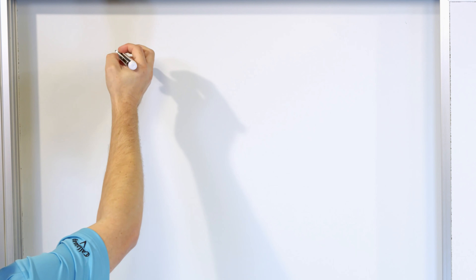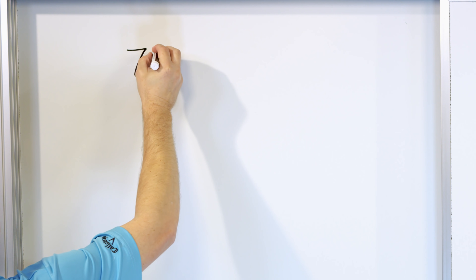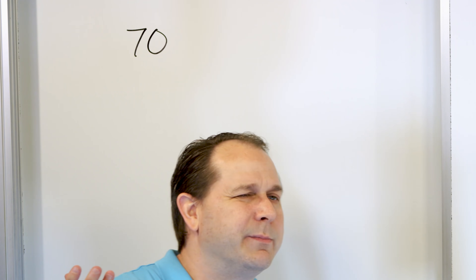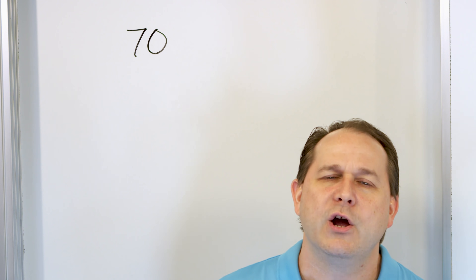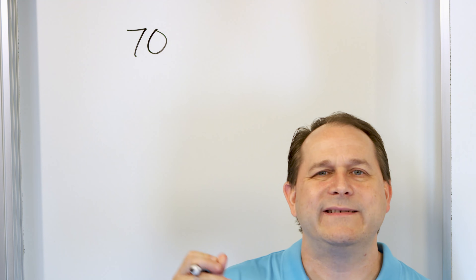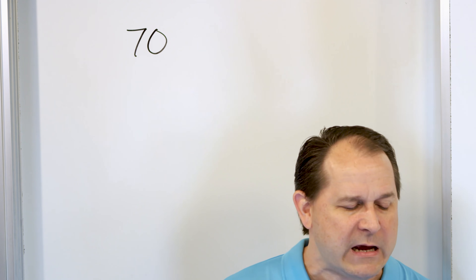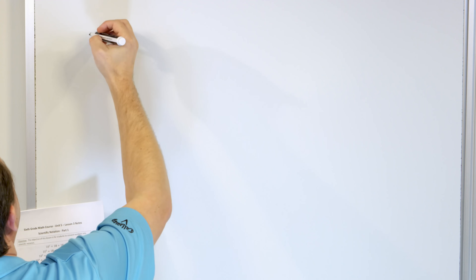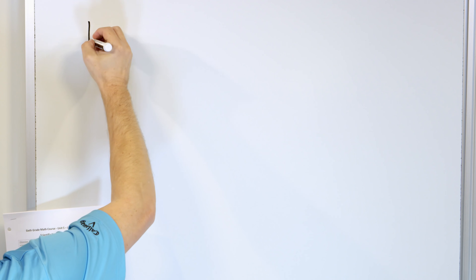For our first problem, we're going to take something smaller so we can understand the concept. We're going to write the number 70 in scientific notation. Before we can do that, I need to remind you of a couple of things. Let's talk about powers of 10.